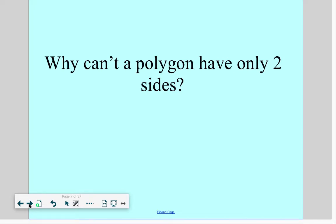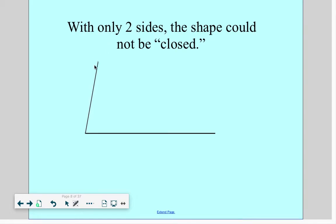Why can't a polygon have only two sides? Well, if you look at a shape with only two sides, there is a huge opening here. It's not closed. So you have to have that third side to close up your shape.